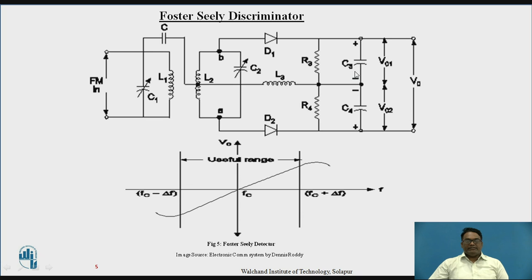R3 and C3 act as an RC filter, and R4 and C4 act as an RC filter or the load for this circuit. The voltages across these two are V01 and V02, and the total output is given by the addition of V01 and V02.